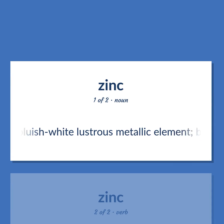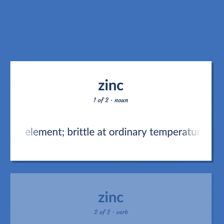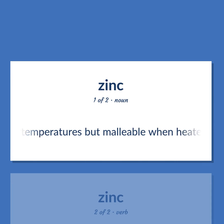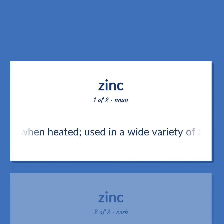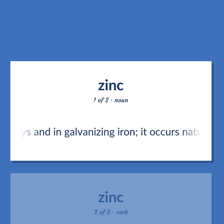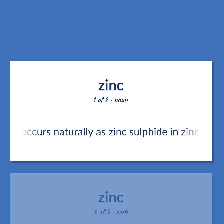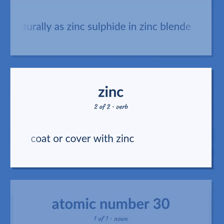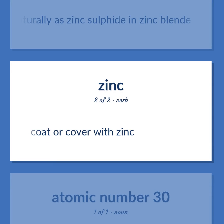Zinc: A bluish-white lustrous metallic element. Brittle at ordinary temperatures but malleable when heated. Used in a wide variety of alloys and in galvanizing iron. It occurs naturally as zinc sulfide in zinc blende. Also: to coat or cover with zinc.